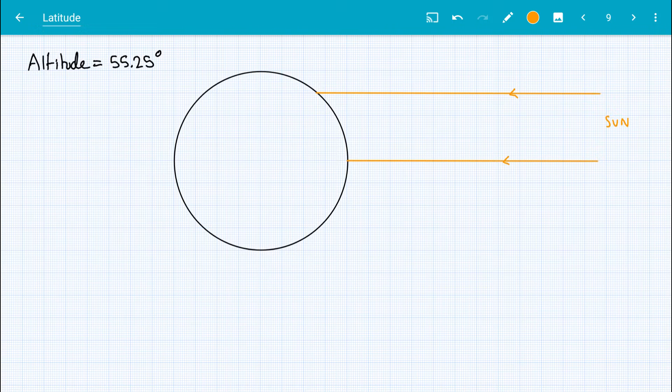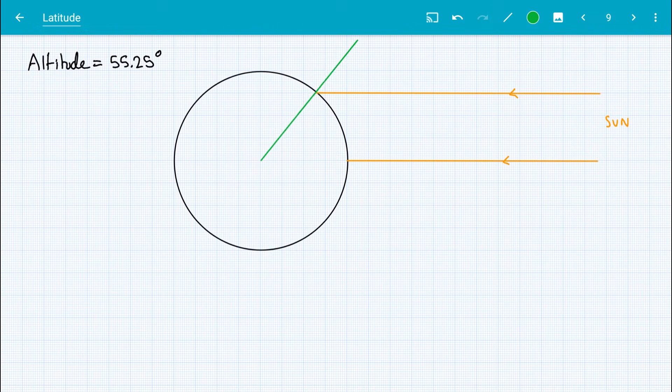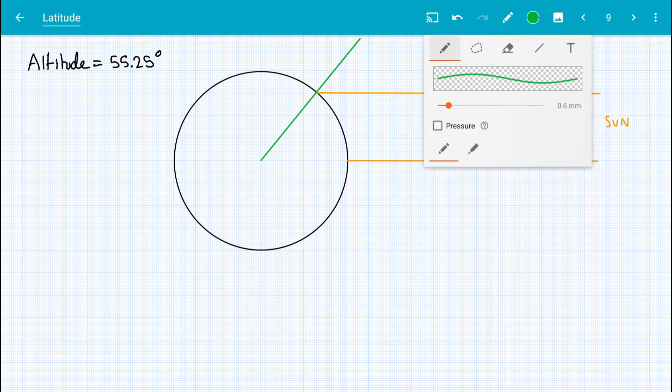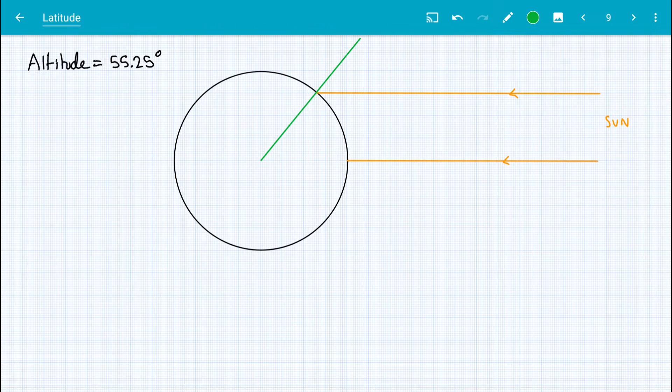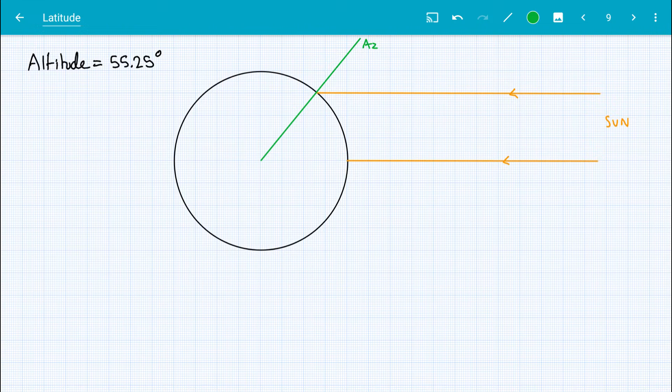So the point where the top ray touches the circle, that's where we are stood as observers. This line points from the center of the earth up to the point directly over our head. That's the azimuth, so I'm going to label that Az. And we also have a line perpendicular to that. I'll do my best to draw it.